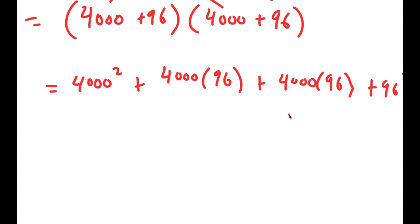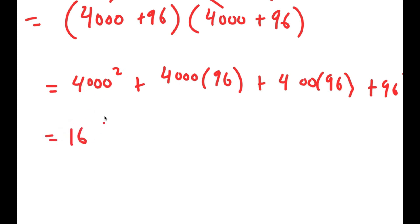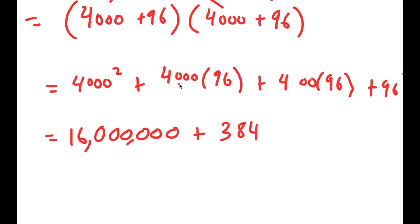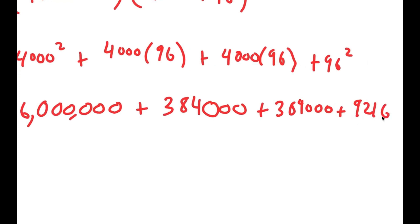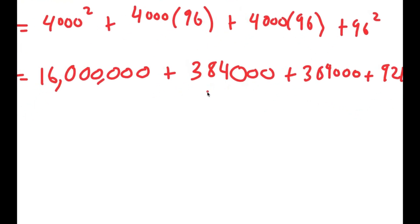For 4,000^2: 4^2 = 16 and 1,000^2 = 1,000,000, so I get 16,000,000. For 4,000 times 96: 4 times 96 = 384, so adding three zeros gives 384,000 — and there are two such terms. For 96^2 = 9,216. So I have 16,000,000 plus 384,000 plus 384,000 plus 9,216.